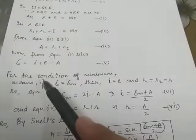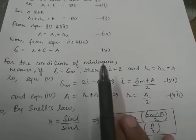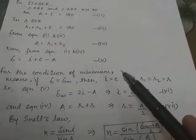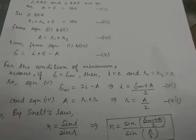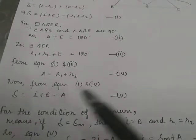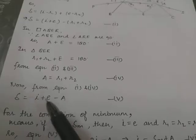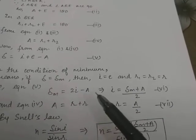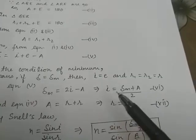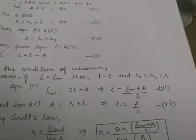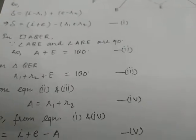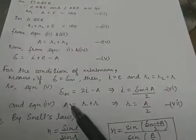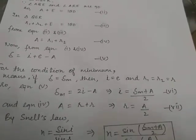Under the condition of minimum deviation, δ equals δm, then i must equal e and r1 equals r2, say equal to r. Substituting into equation five, i plus e becomes 2i, giving δm equals 2i minus A, so i equals (δm plus A) divided by 2. This is equation number six. From equation four, putting r1 equals r2 equals r gives A equals 2r, so r equals A divided by 2. This is equation number seven.